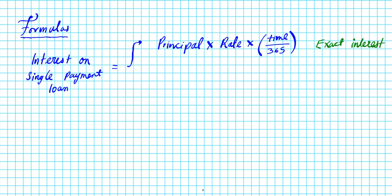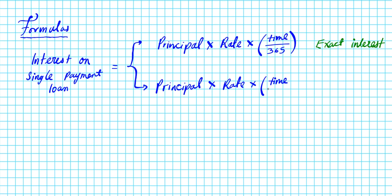Now, how about the ordinary interest? You compute the product of the principal times the interest rate in decimal form, times the time in days, divided by 360. This is the formula for ordinary interest.